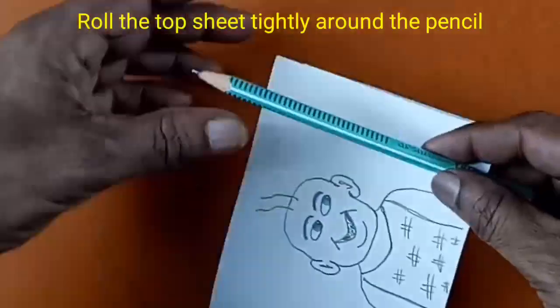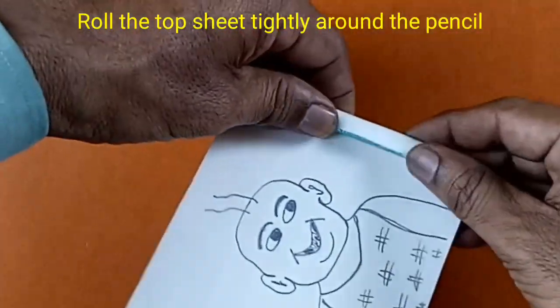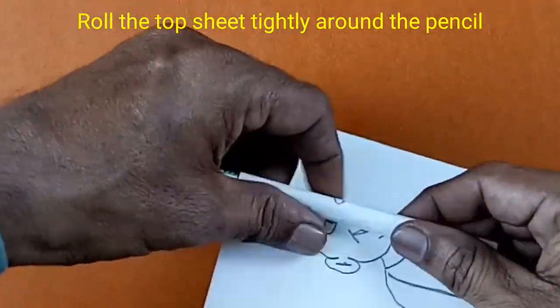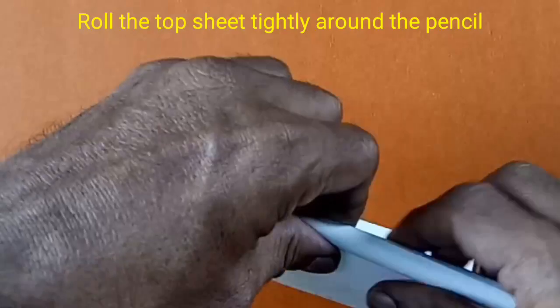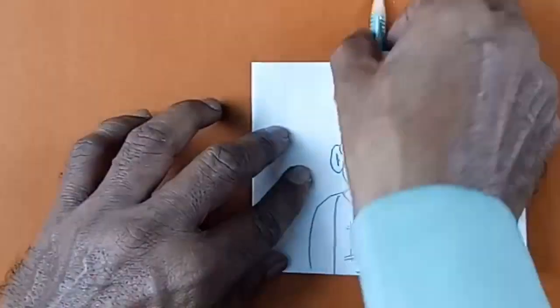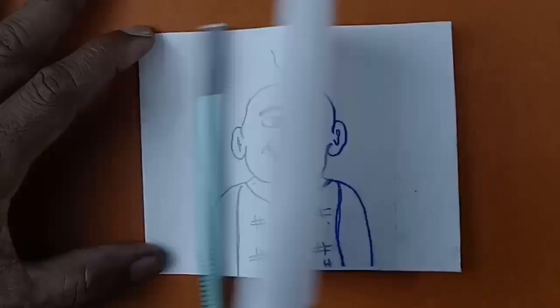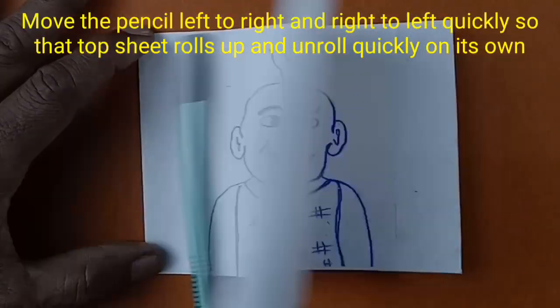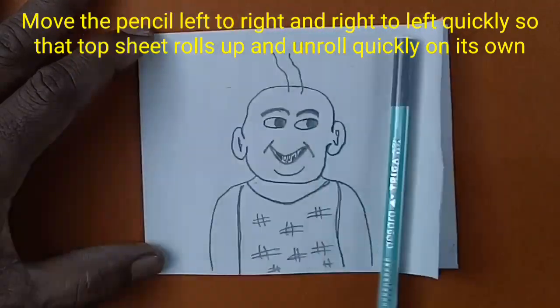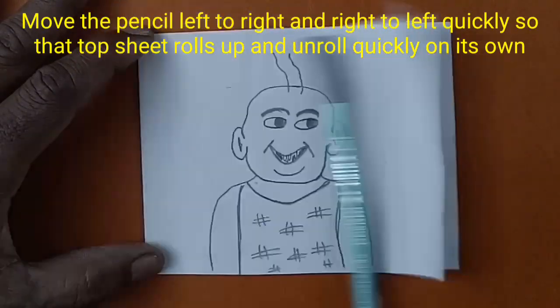Roll the top sheet tightly around the pencil. Move the pencil left to right and right to left quickly so that the top sheet rolls up and unrolls quickly on its own.